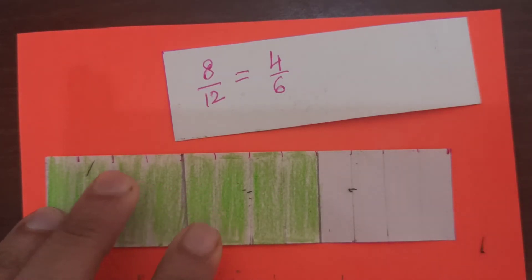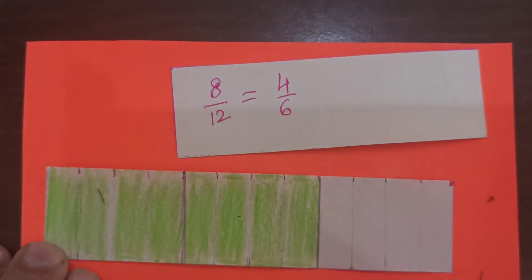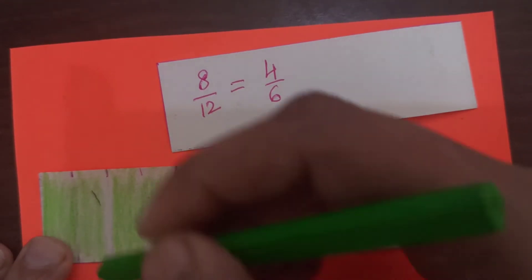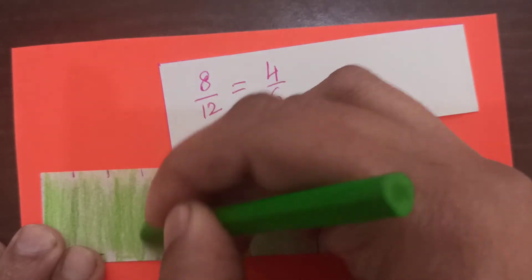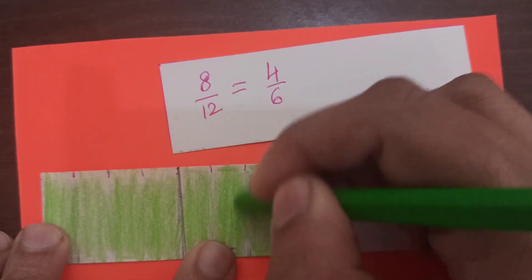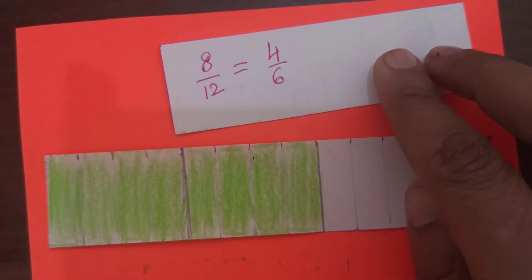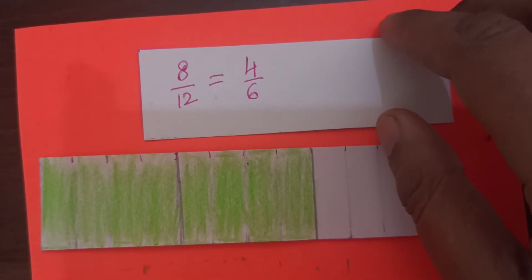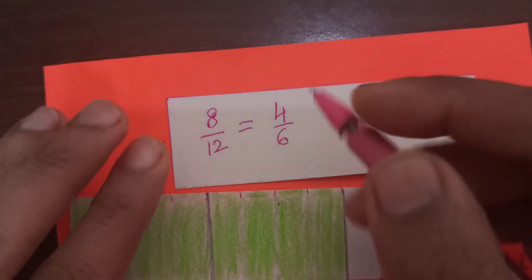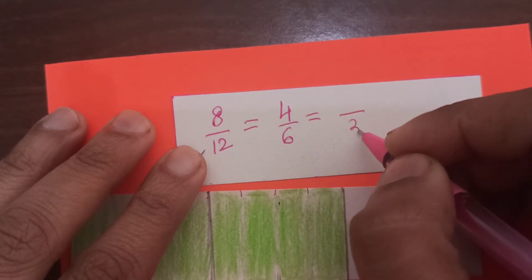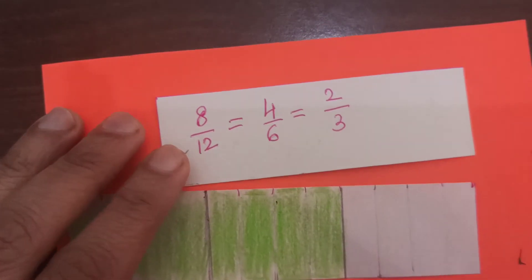Erasing the line means combining the parts. See, what do I get now? Let me make it good. How many total parts can you see now? So, yes. Total parts we can see are 3 and the shaded ones are 2.